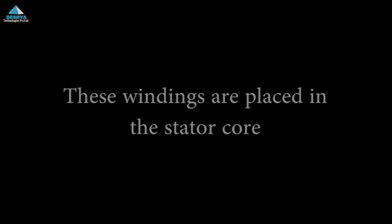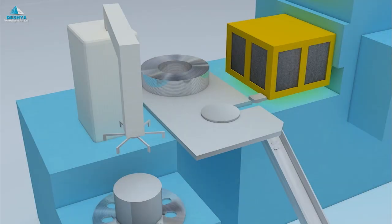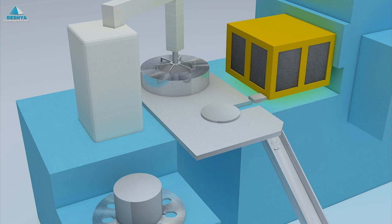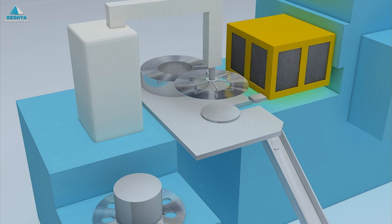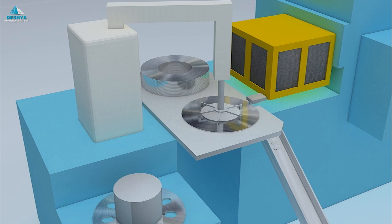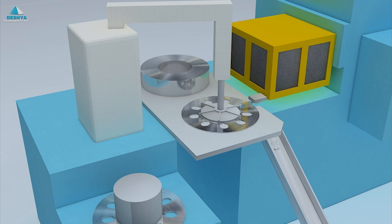There are detailed animations that explain how different parts of the motor are manufactured. For example, this animation shows how stator laminations are made and how the slots are punched in the laminations. These animations give a realistic feel of the manufacturing process of the motors.